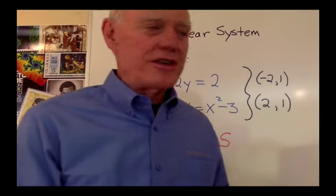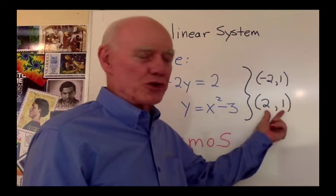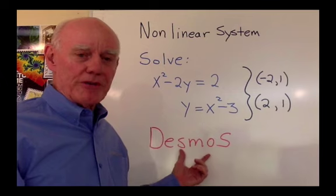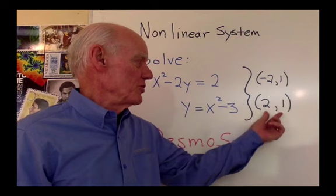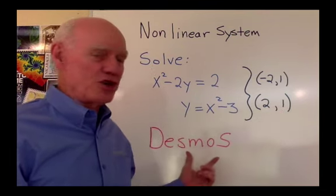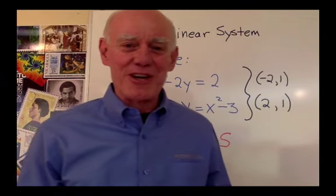So you can see that by solving this system algebraically, we get these two solutions. What I want to do now is go to the computer and go to our graphing program, Desmos, and get a visual confirmation that these are the two solutions. We'll solve it again by graphing and see where these solutions show up on the intersection of those graphs. Let's go to the computer now.